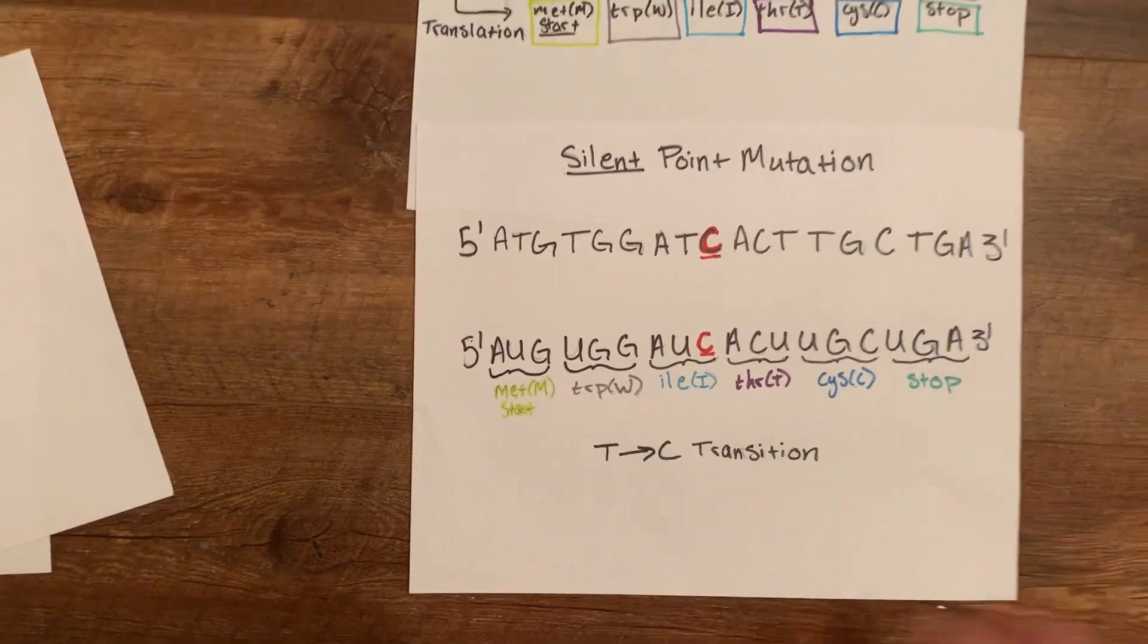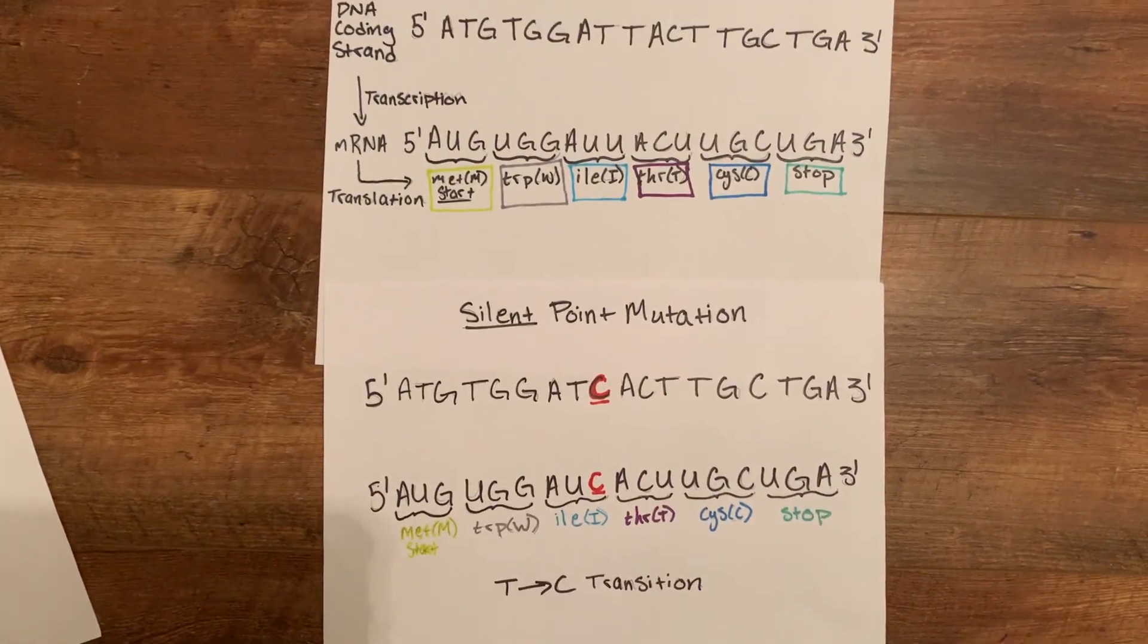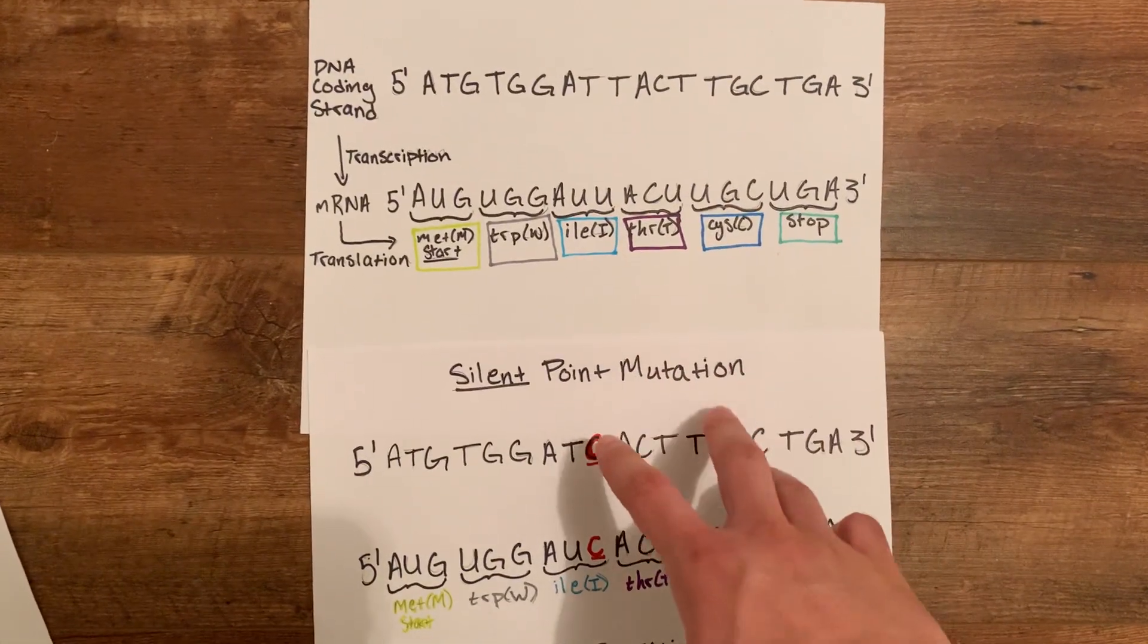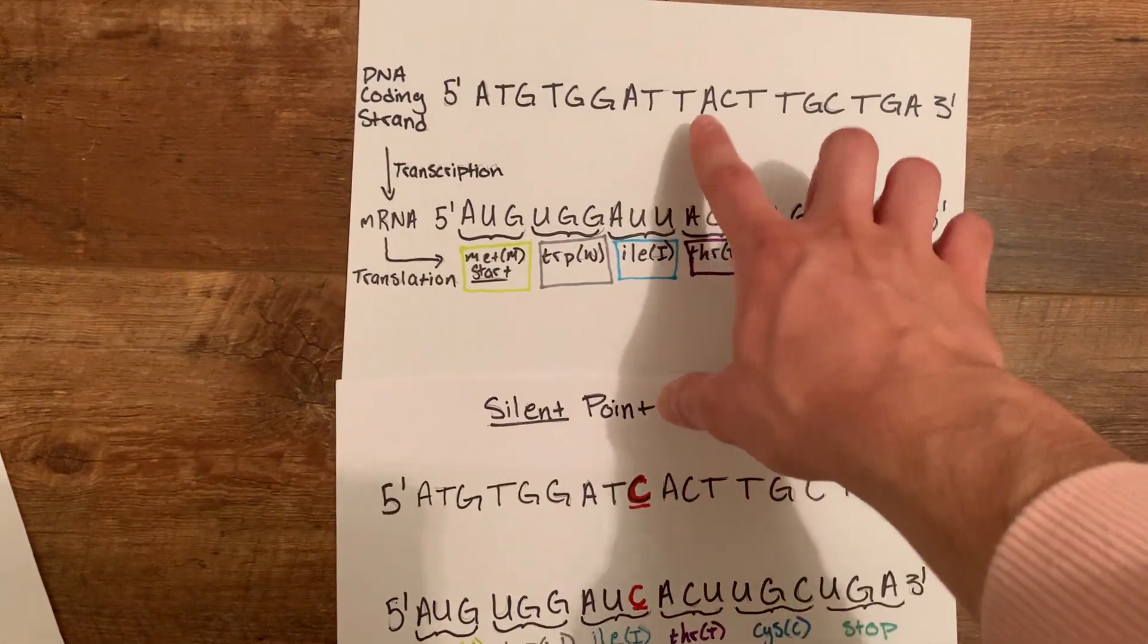The next example is a silent point mutation. So the silent point mutation also switches out a base. We go from T to C. That is a T to C transition.